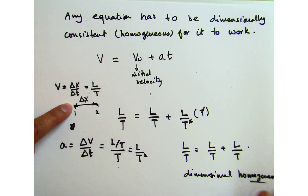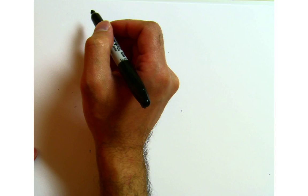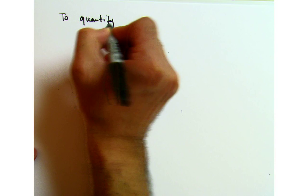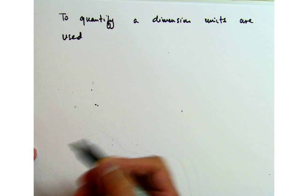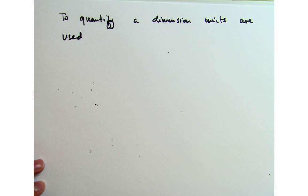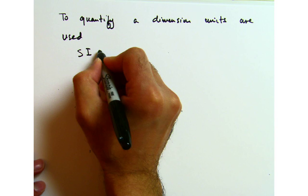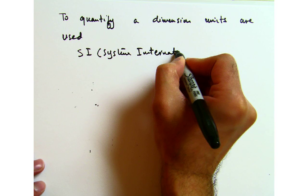Another thing about dimensions: we talked about certain dimensions — length, time, and temperature — to quantify a dimension. Units are used. We use units to basically specify quantities. There are two sets of units: one is the SI system and the other is the English units system.